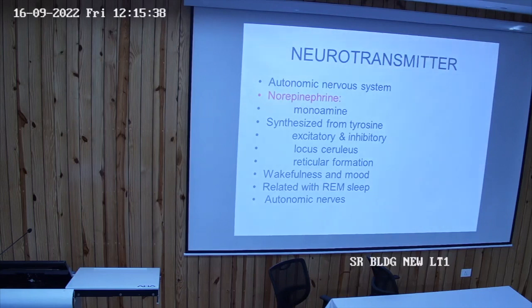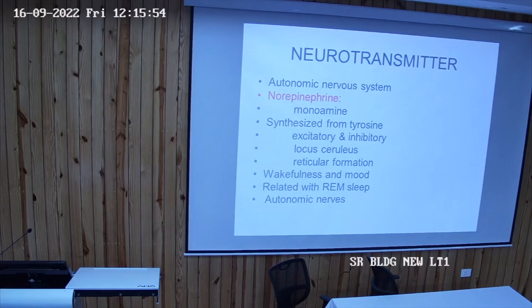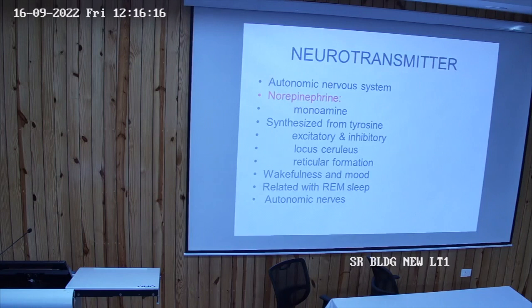The second variety are the monoamines: noradrenaline, adrenaline, and dopamine. Norepinephrine is a monoamine synthesized from the amino acid tyrosine, or from phenylalanine. Norepinephrine can be both excitatory and inhibitory.